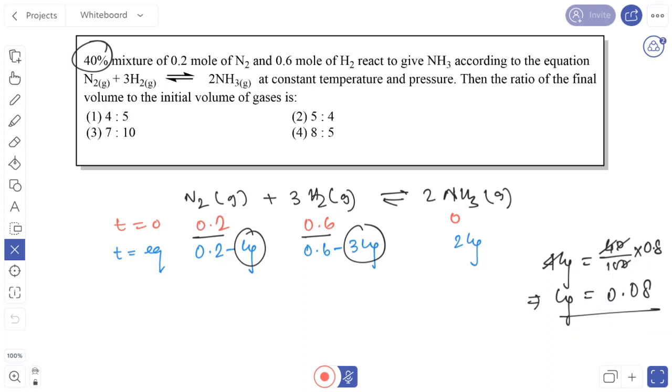That is the advancement of reaction at equilibrium. If we put the values here: 0.2 minus 0.08 equals 0.12, 0.6 minus 3 times 0.08 equals 0.36, and 2 times 0.08 equals 0.16.